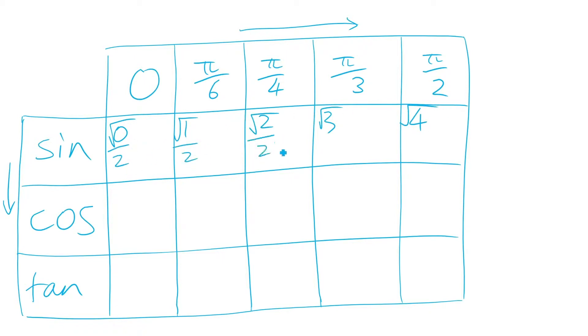So now we've got our exact values. Some of these can be rewritten in a nicer way. Obviously that's 0, we've got half, and that one's equal to 1. We've got all our sine values.